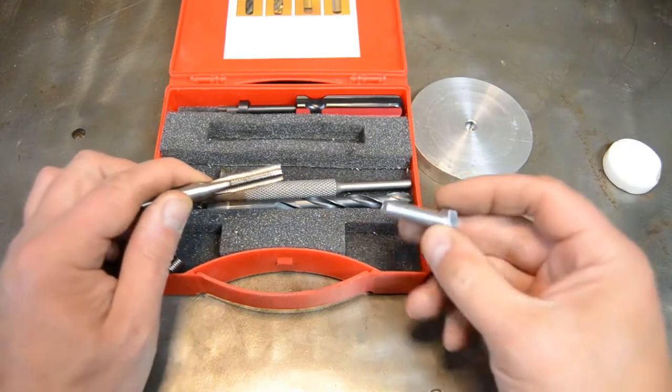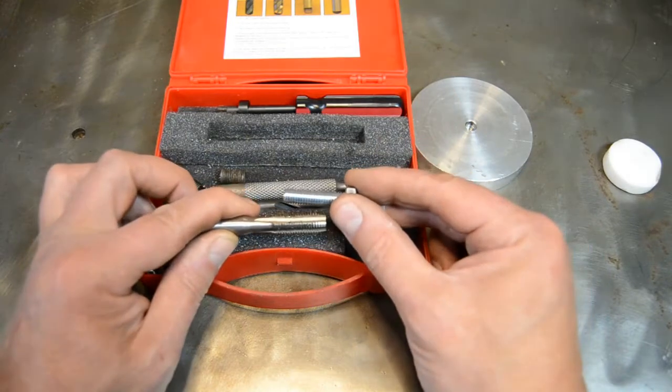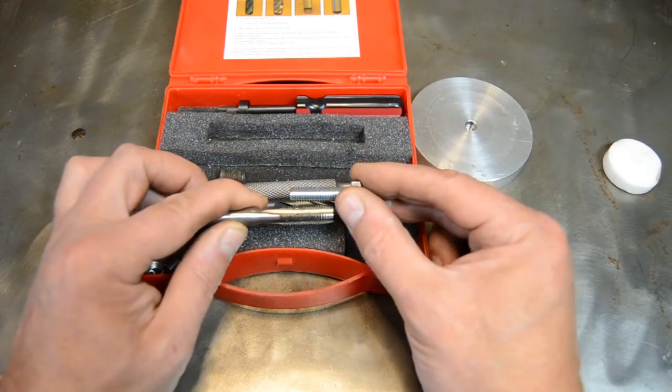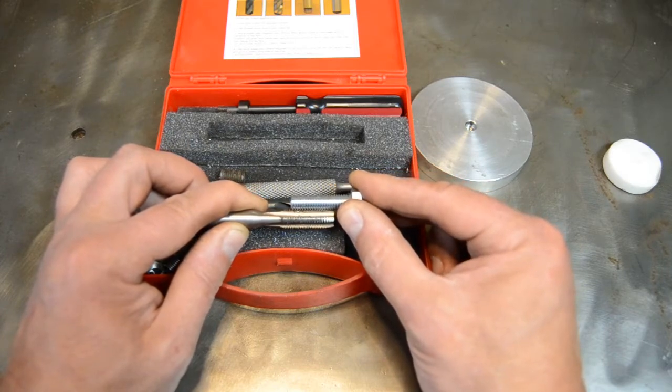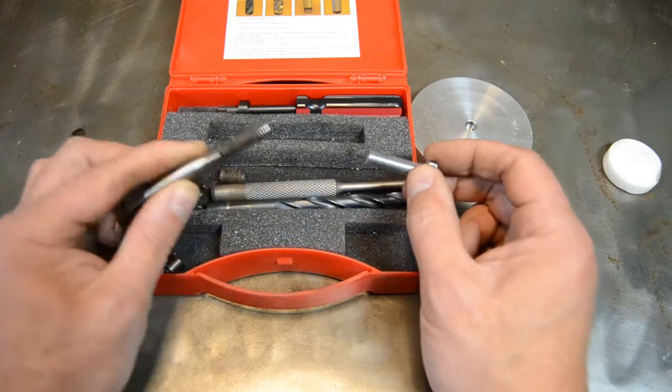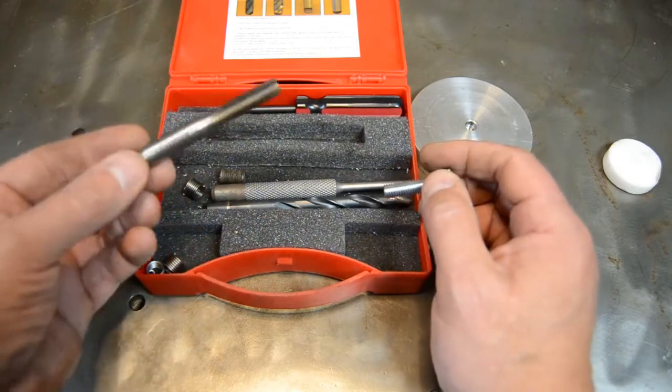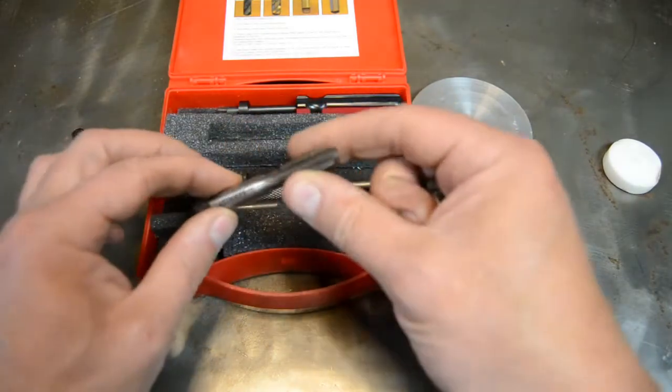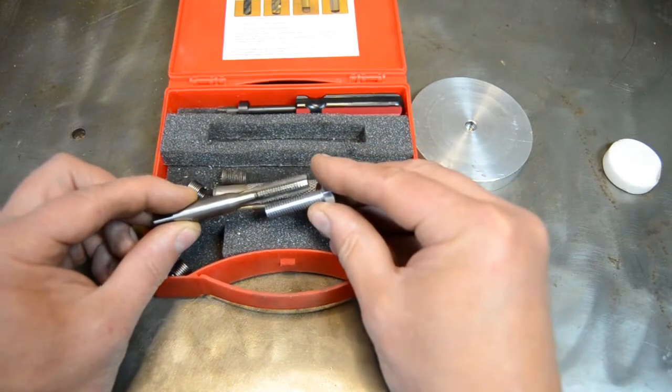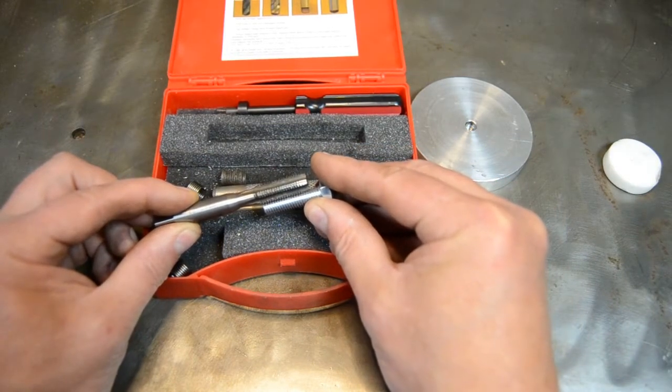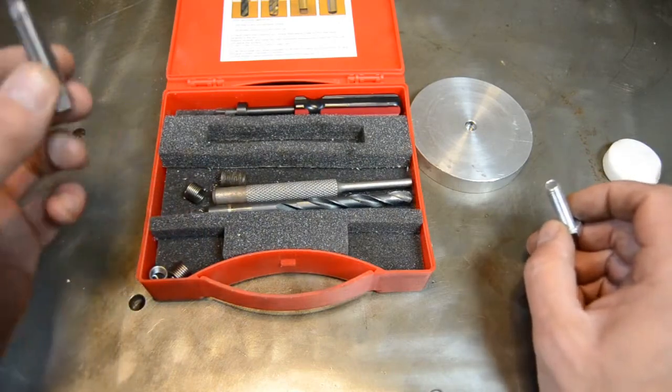First thing we're going to do, just get the correct bolt for the finished thread. And we're just going to make sure the pitch is the same. So just lay the bolt gently in the tap and that should exactly match the pitch of the teeth on the tap. It's always worth just checking to make sure you've got the correct pitch, because once you put that insert in, it's very difficult then to change it to the correct one if you've got it wrong.